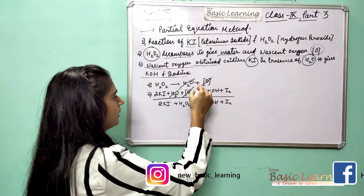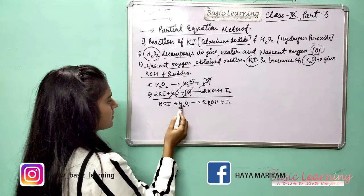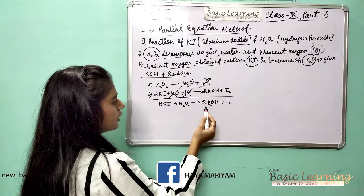Now what we are left with: 2KI plus H2O2 gives 2KOH plus I2. So this was the first example about the partial equation method.